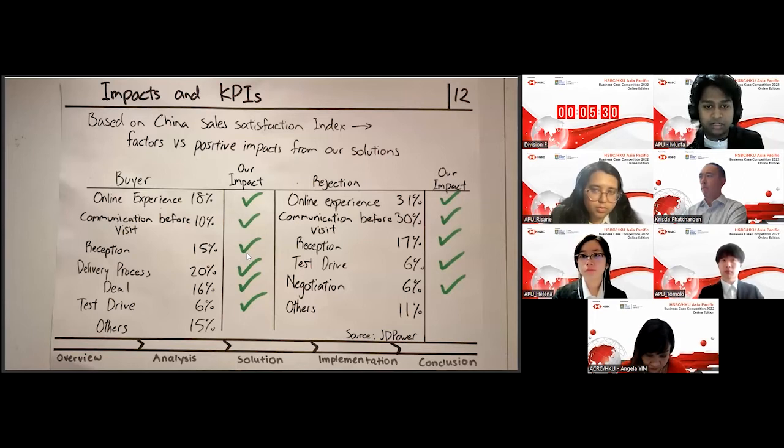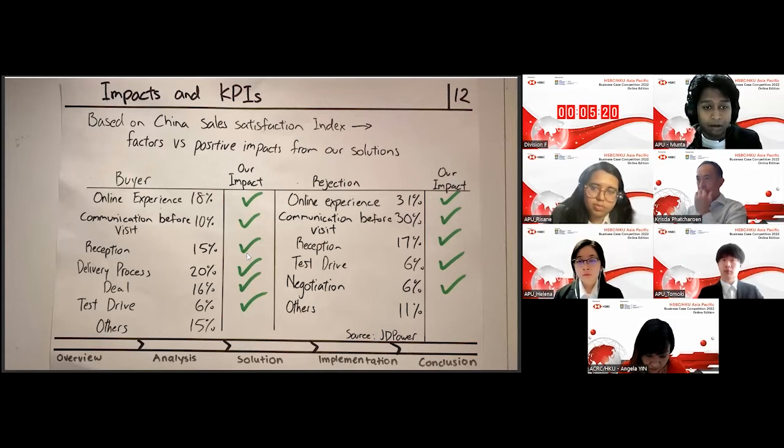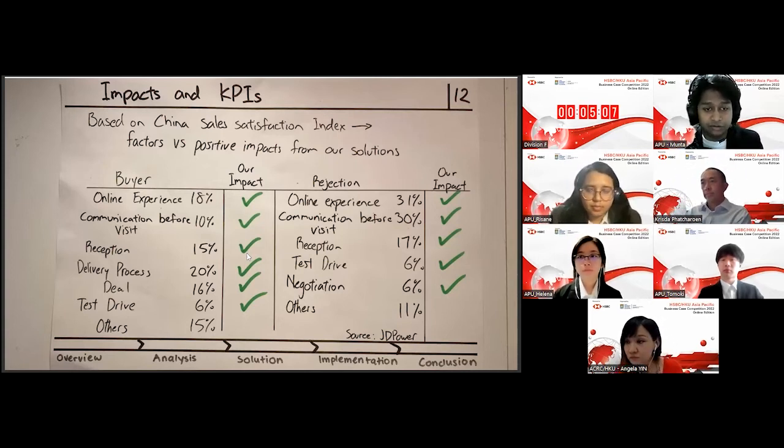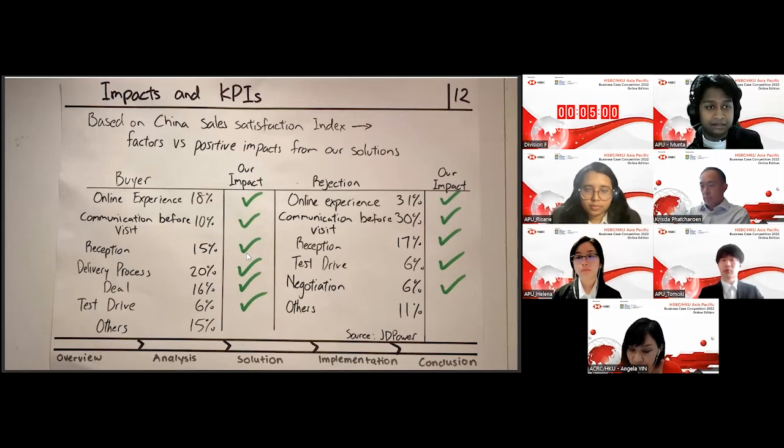And people who reject it generally consider the online experience, the communication before the visit, and the reception, which is, again, talks with the sales representative. And so our solutions today that we've shown totally base and focus towards these issues of online experience, of communication before visit, of the delivery process, and the sales representatives. And because our solutions encompass these different factors, we are confident and we believe that our solutions will have these relevant impacts and achieve these KPI goals.